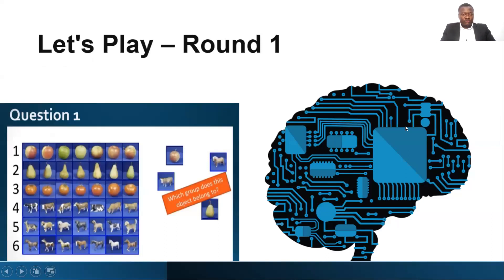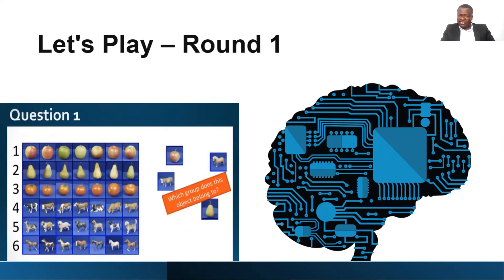Before we start with anything, let's look at this. I've got different objects shown — if I said go and group those objects, how would you group them? How would you identify them in terms of grouping? I'm sure you already have some answers. The best thing really is to look at certain features that are common and then try to segment them nicely. But some might be similar, so it could get a little tricky.